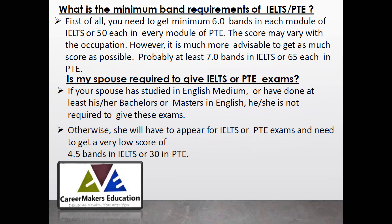The minimum band requirement is 6 bands, but that is just the minimum — we want you to get as high a score as possible in IELTS or PTE, as the more you score, the more eligible you will be for PR. If your spouse needs to give the IELTS or PTE exam and they are not from an English-medium background, they need to get a minimum of 4.5 bands. If the spouse is required to get 6 bands to earn the 5 additional points, they need to fulfill that requirement.